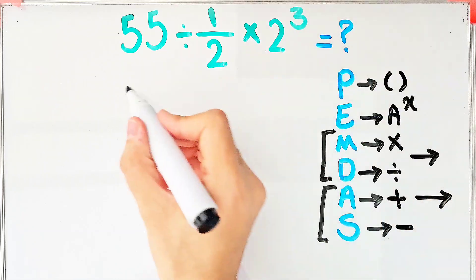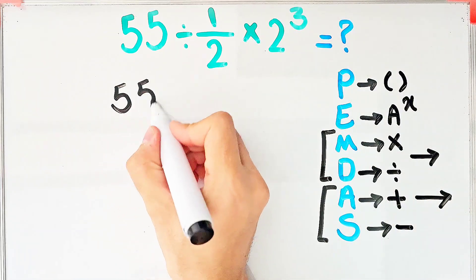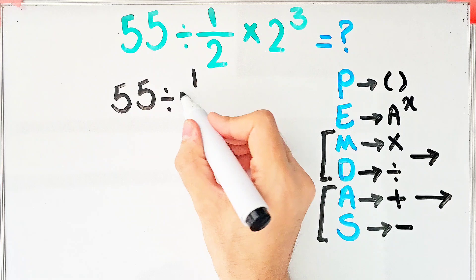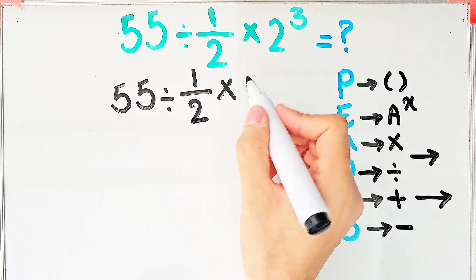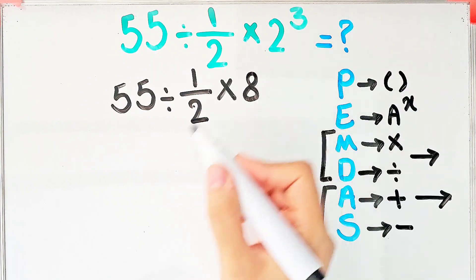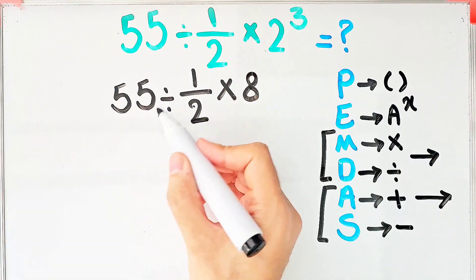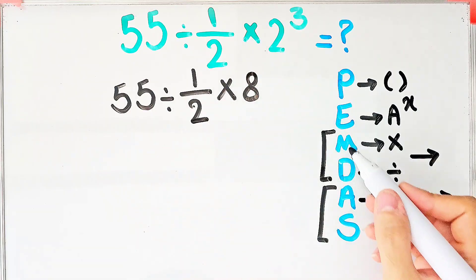According to the PEMDAS rule, first we simplify the exponent. We have 55 divided by 1 over 2, then times 2 to the power of 3, that equals 8. Because we have multiplication and division, we start from the left and simplify the question.